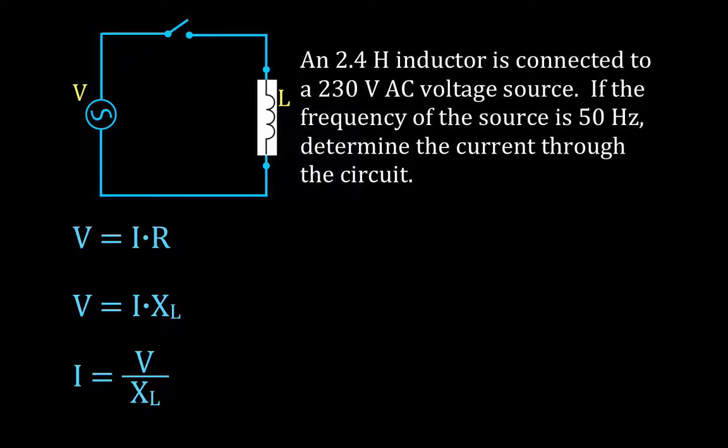Solved for the current, I is equal to the voltage divided by XL. And we don't know the inductive reactance, but we can calculate it because we're given the inductance of the inductor and we're given the frequency of the source. So this is the equation we're going to use. The inductive reactance is equal to 2 times pi times F times L, L is the inductance of the inductor.